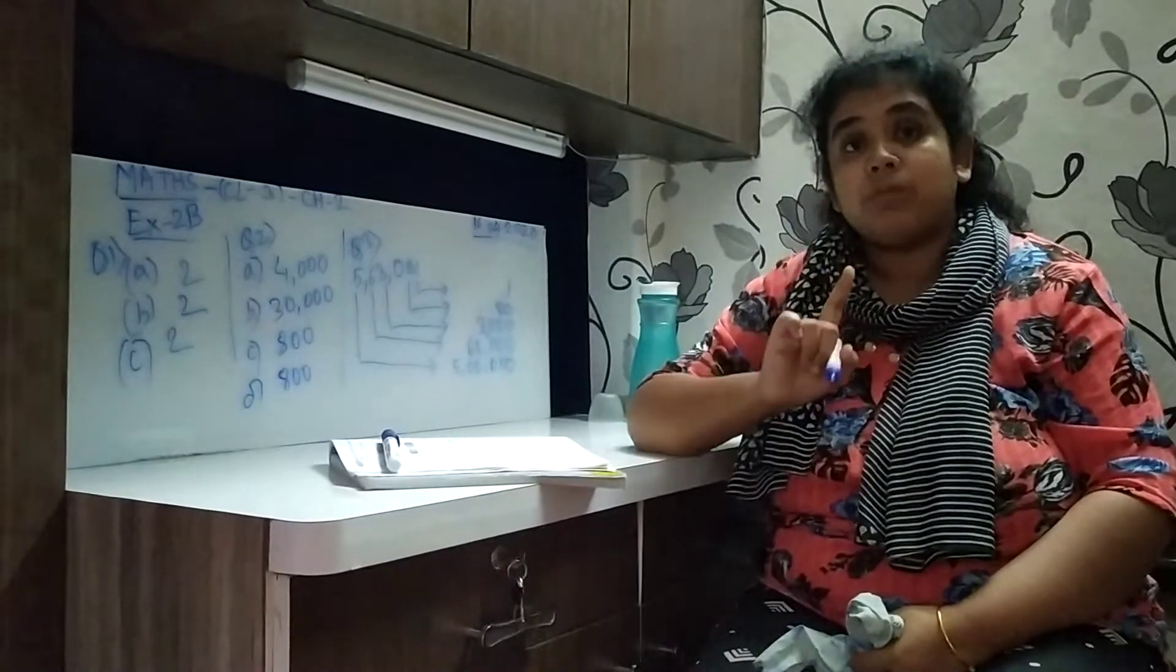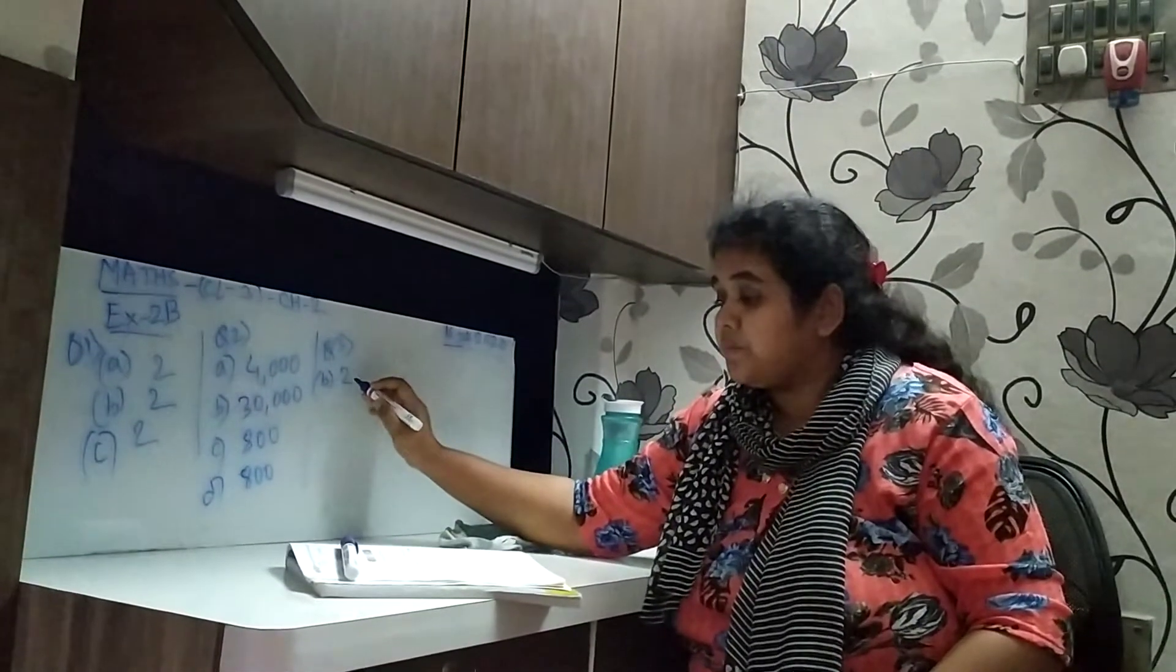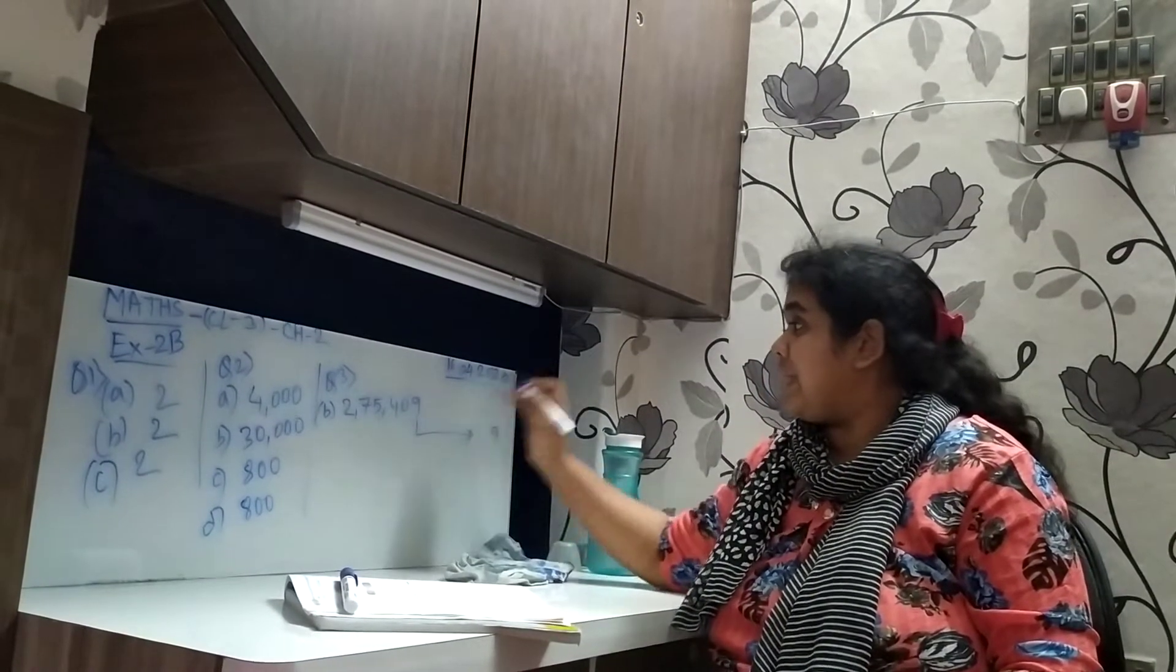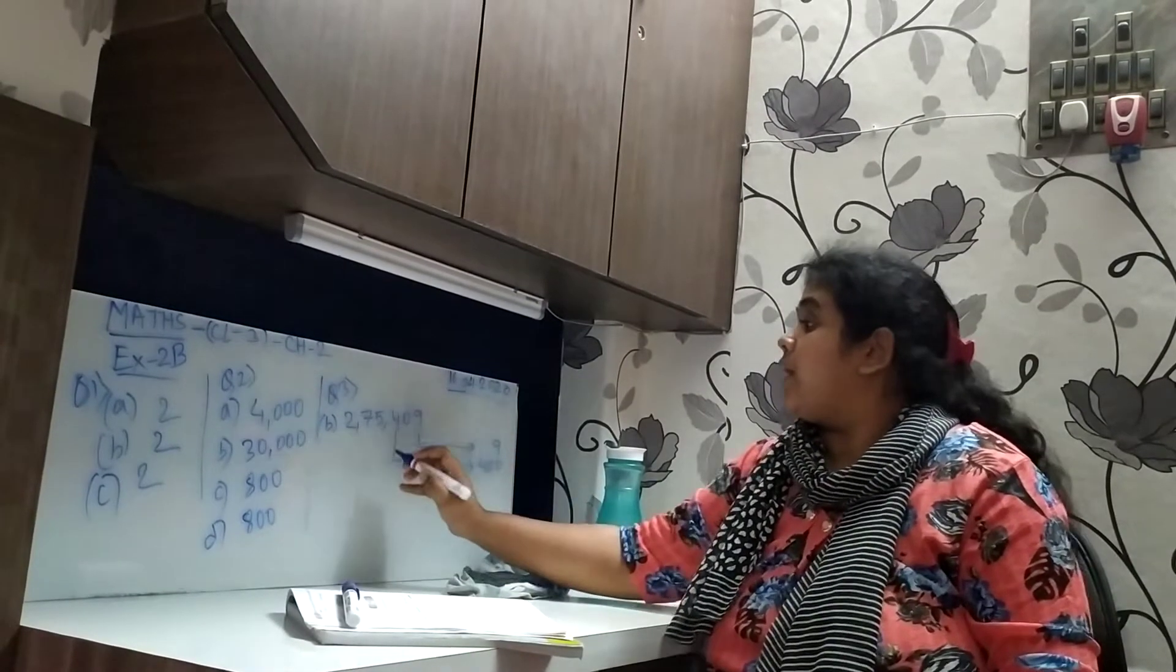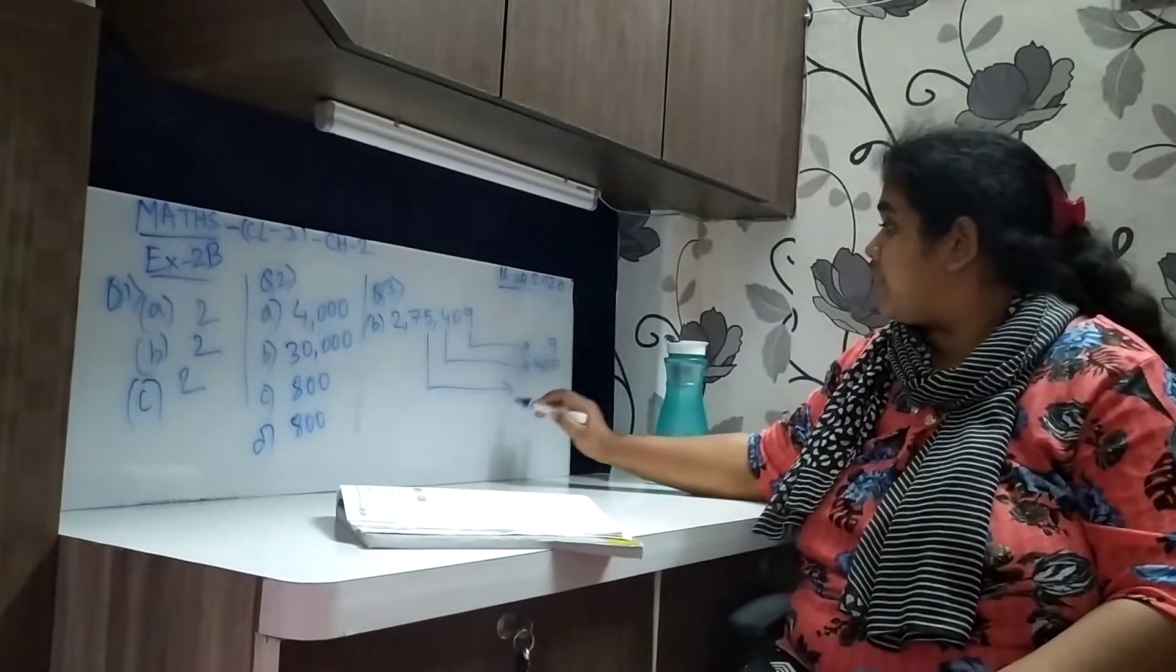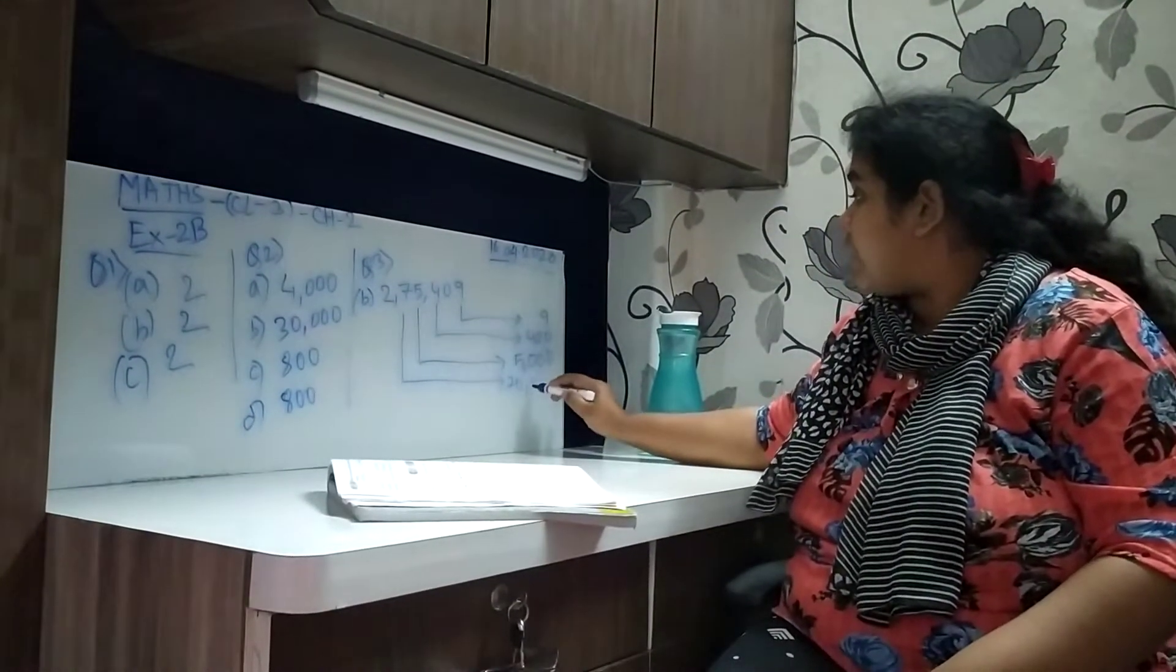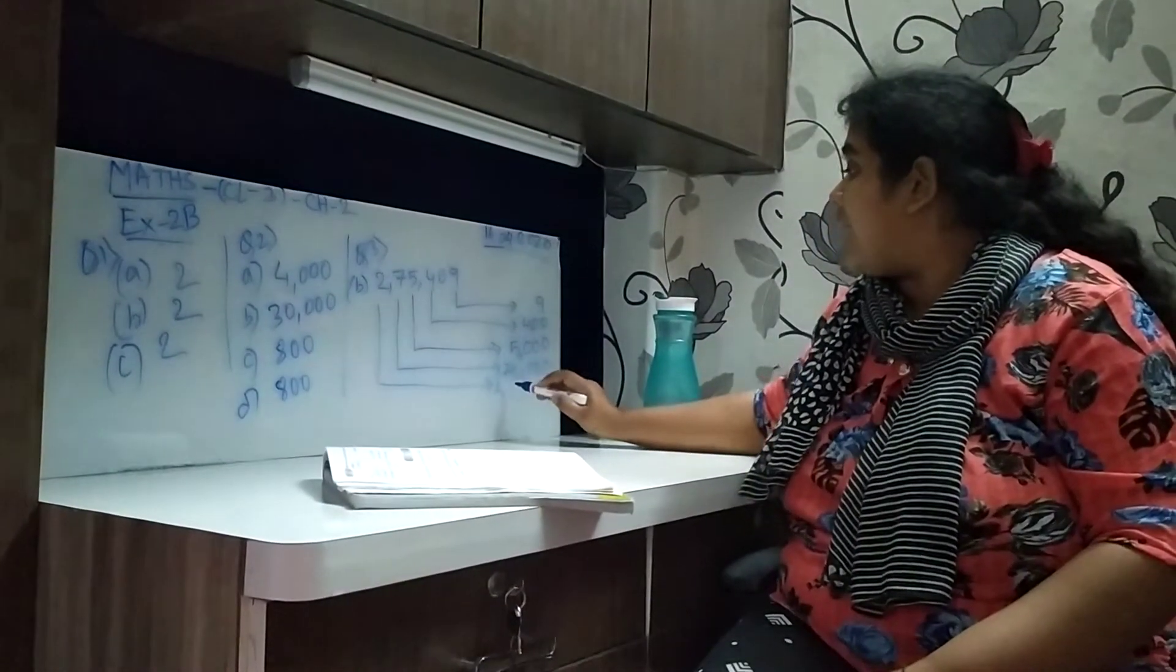We will do one more sum. Question number 3B. That is 2,75,409. We will start with the ones. Yes, that is 9. 4. The place value is 400. The place value of 5 is 5000. Place value of 7 is 70,000. And the last, the place value of 2 is 200,000.